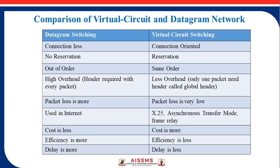There are two services provided by packet switching networks. The first is datagram switching and the second is virtual circuit switching. Datagram switching is a connectionless service where a connection is not established before sending data from node A to node B — packets are sent directly toward the receiver and all packets may take different routes. In virtual circuit switching, a logical connection is established before sending the packets, so it is connection-oriented.